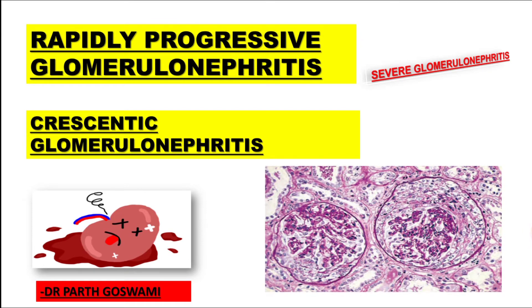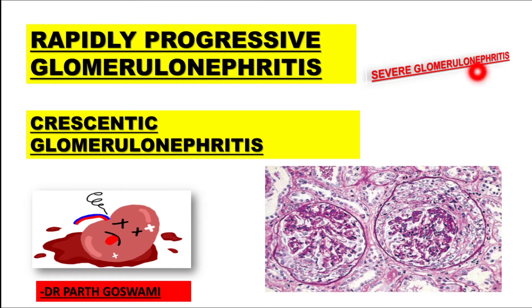Hello everyone, myself Dr. Parth Goswami, and today I am going to teach you one important topic from kidney — that is rapidly progressive glomerulonephritis. It is also known by the name crescentic glomerulonephritis because crescent formation is present in this particular variety. It is a severe form of glomerulonephritis.